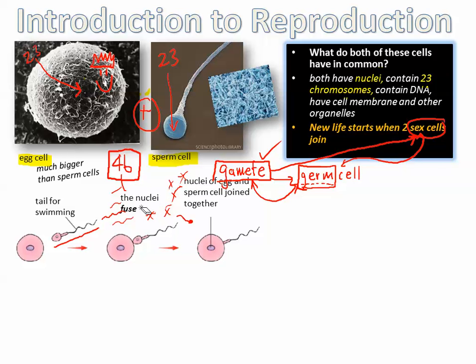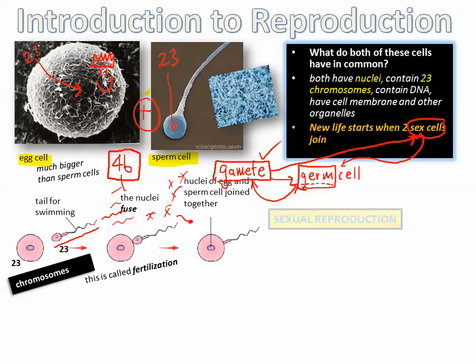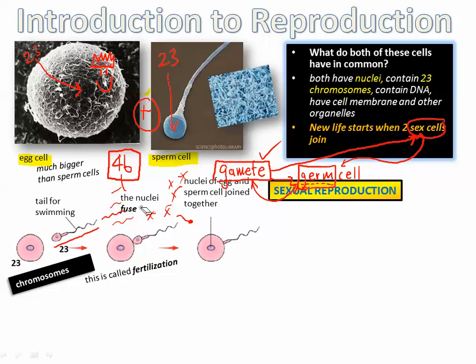The nuclei are going to fuse — fuse means they're going to join. This is called fertilization, when everything joins together. There are 23 chromosomes from one side and 23 from the other, and the total makes 46, like we said.